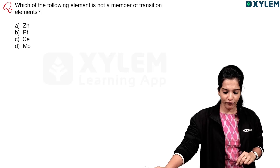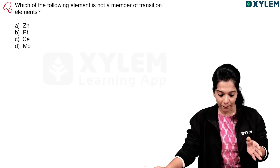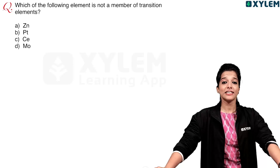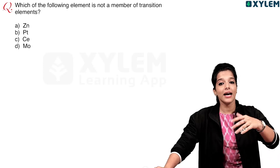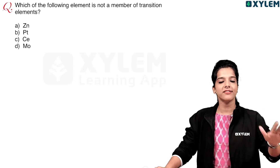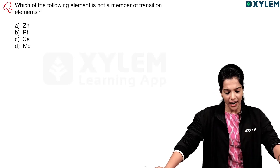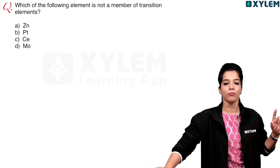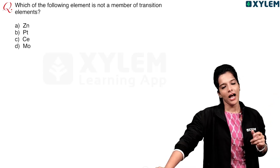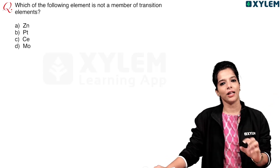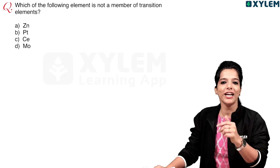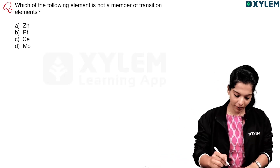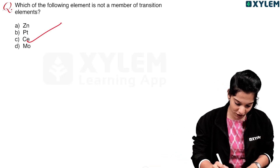Which of the following elements is not a member of the transition elements? Cerium is a lanthanoid element, not a transition element. Option C is the correct answer.